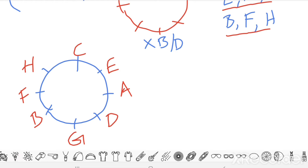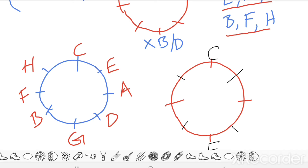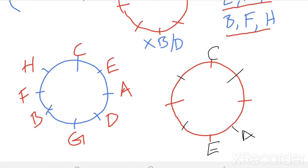I can draw a different arrangement based on the given statements. C is sitting here. Then E is sitting opposite to C. A is sitting in between D and E — it is given. Then F is sitting in between H and B. Then the remaining student G is sitting adjacent to C.